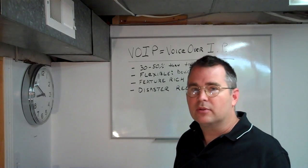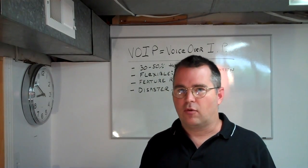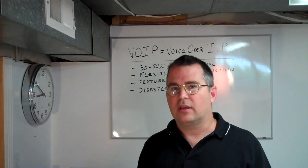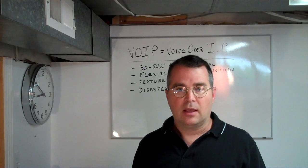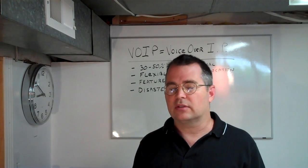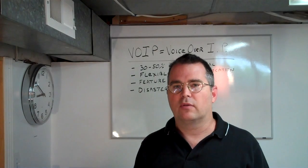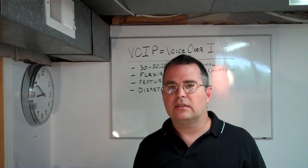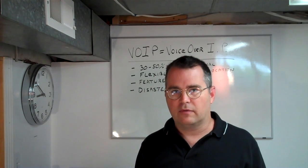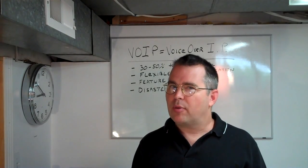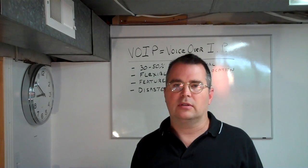Some examples of voice over IP that exist today are pretty common. Skype is a form of voice over IP — it also adds video, and that's part of what VoIP has as a flexible feature. Vonage is also a type of voice over IP. Now Skype, Vonage, and some of these other household-name VoIP providers are proprietary, meaning they're kind of like what we call walled gardens.